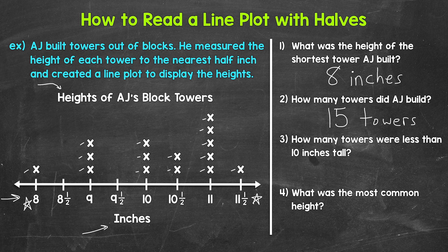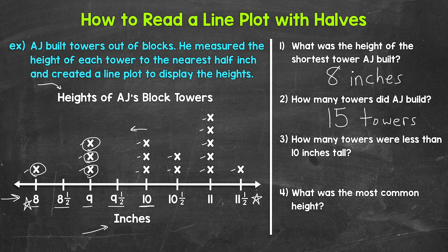Number three: how many towers were less than ten inches tall? We find ten inches on the number line and look at everything to the left — eight inches, eight and a half inches, nine inches, and nine and a half inches. Counting those X's, we get four. So four towers were less than ten inches tall.